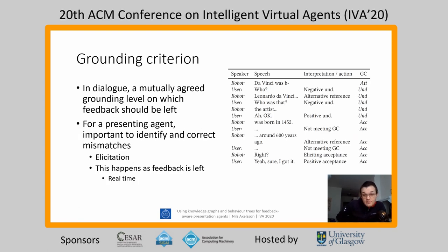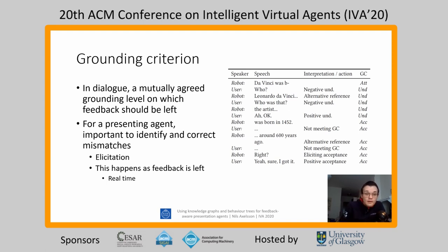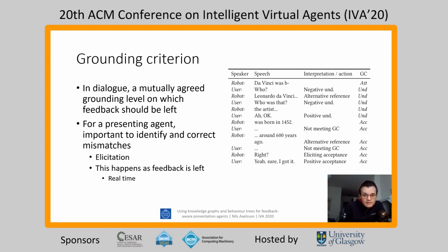Another part of Clark's theory we use is the idea of a grounding criterion: a feedback level that participants in a dialogue agree feedback should be left on for the dialogue to continue as normal. The rightmost column in the figure on the right shows the system's approximated grounding criterion at all turns in the dialogue. For our presenting system, it's important to identify when the user thinks the grounding criterion is lower than the system expects, and to interpret when the user's negative feedback raises the grounding criterion. Since feedback changes in real time, the grounding criterion also changes in real time — justifying our use of a real-time model.